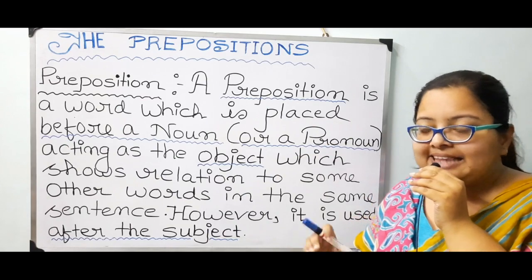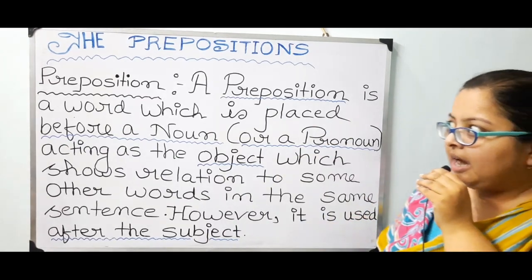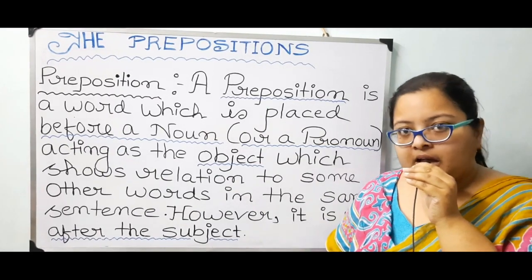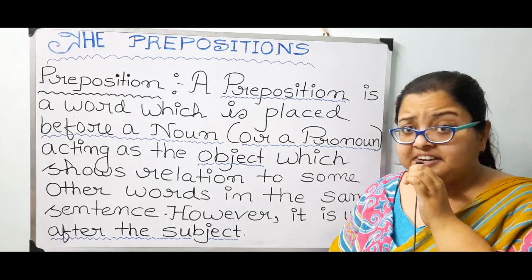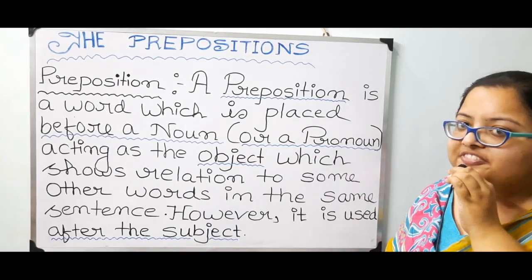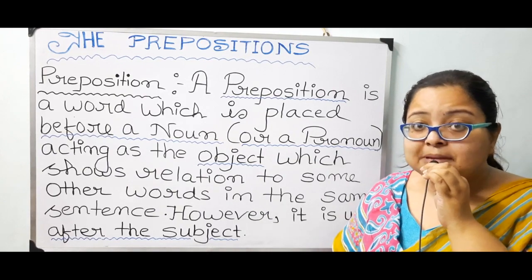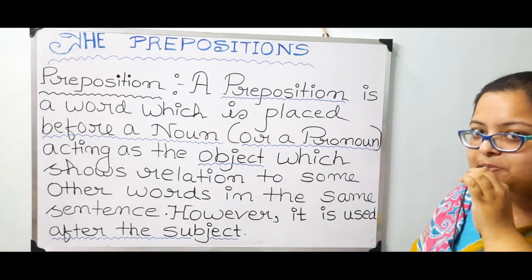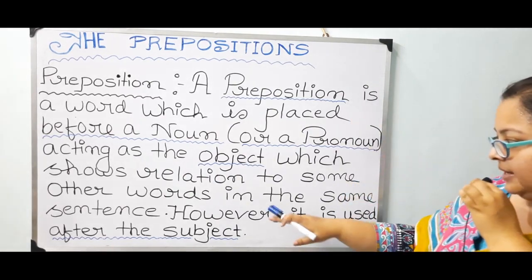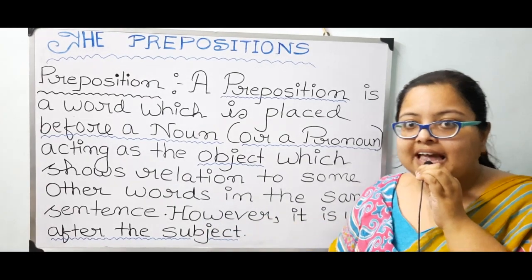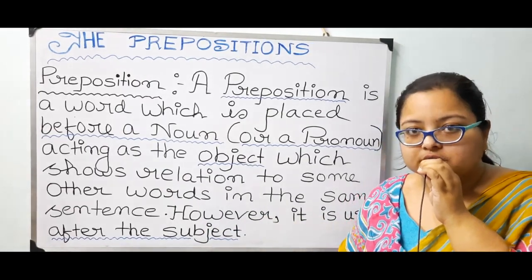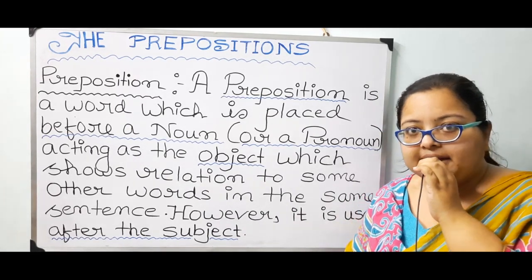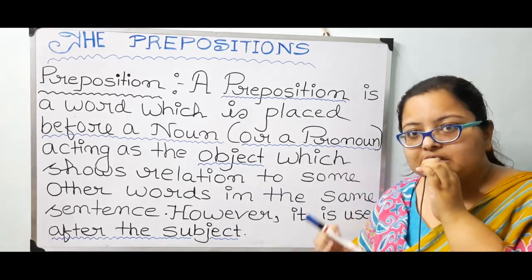Of some words in that sentence. It is used before the object, but definitely it has to be placed after the subject. It can be placed before the object, but it has to be placed after the subject. So it is used after the subject, and it is a form word which establishes relationship among words in a particular sentence.